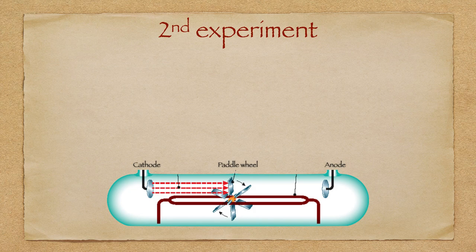Crookes' second experiment involved a paddle wheel. The setup was largely the same, except a paddle wheel replaced the Maltese cross. The result was that cathode rays struck the paddle wheel, pushing it towards the anode direction. Crookes concluded that cathode rays must contain particles with enough energy to move the paddle wheel. Crookes didn't realise it, but this was the beginning to discovering the electron.